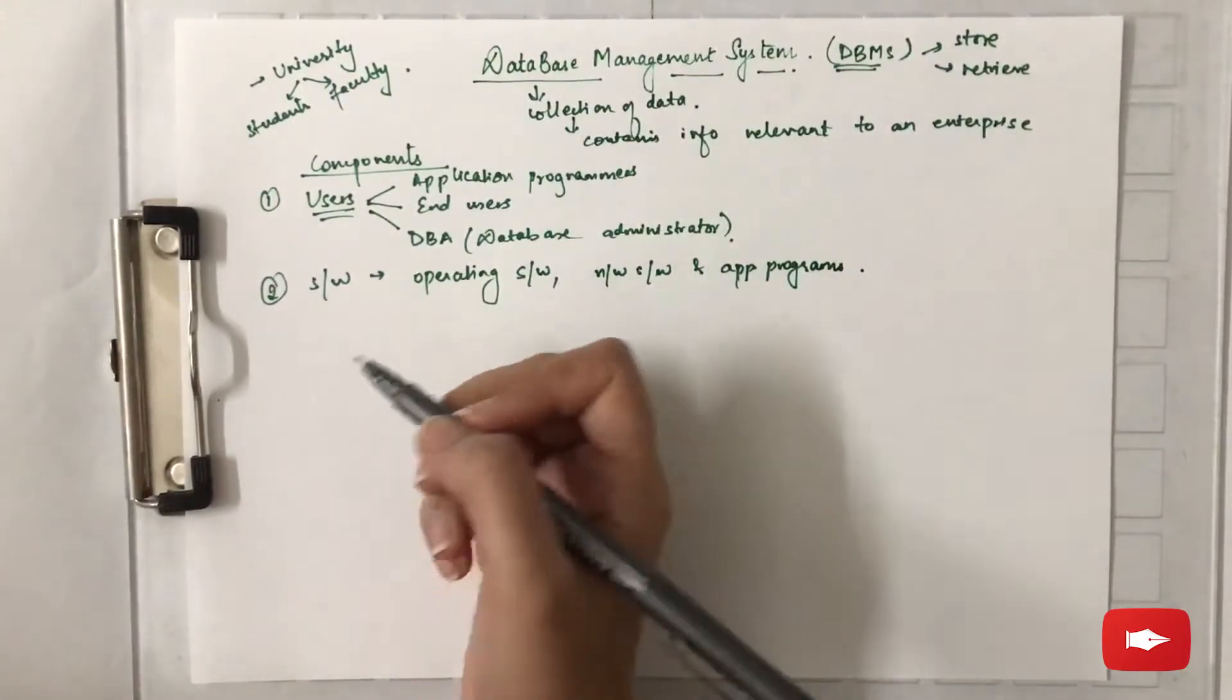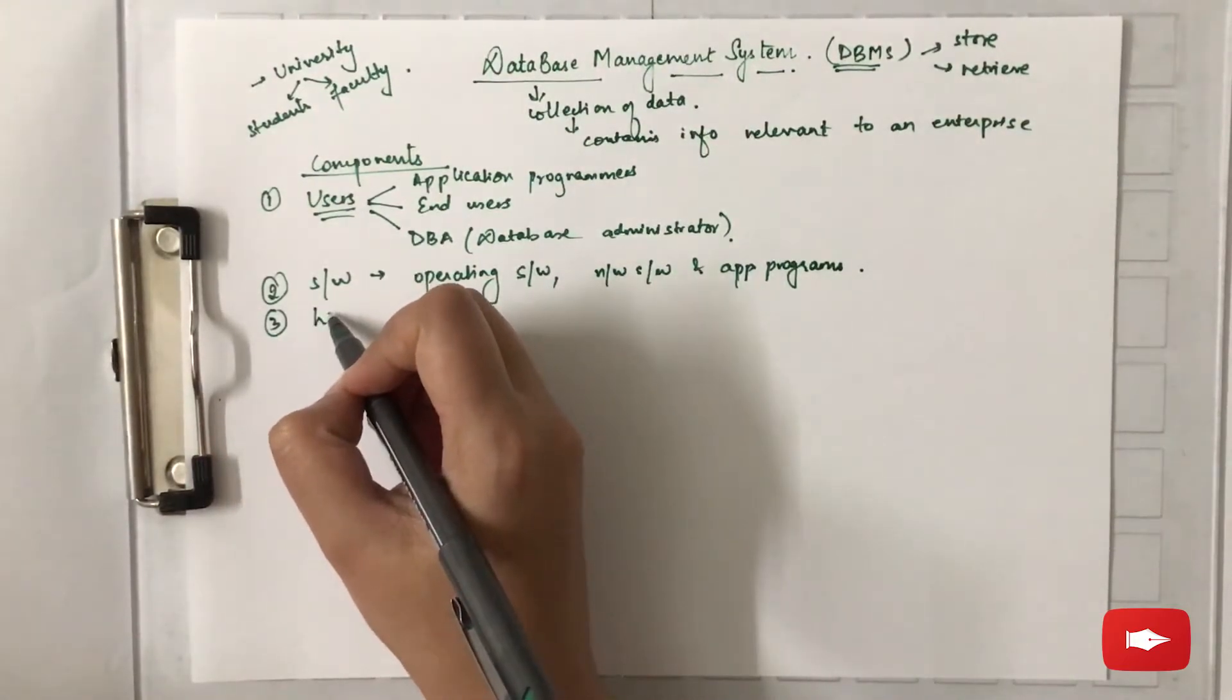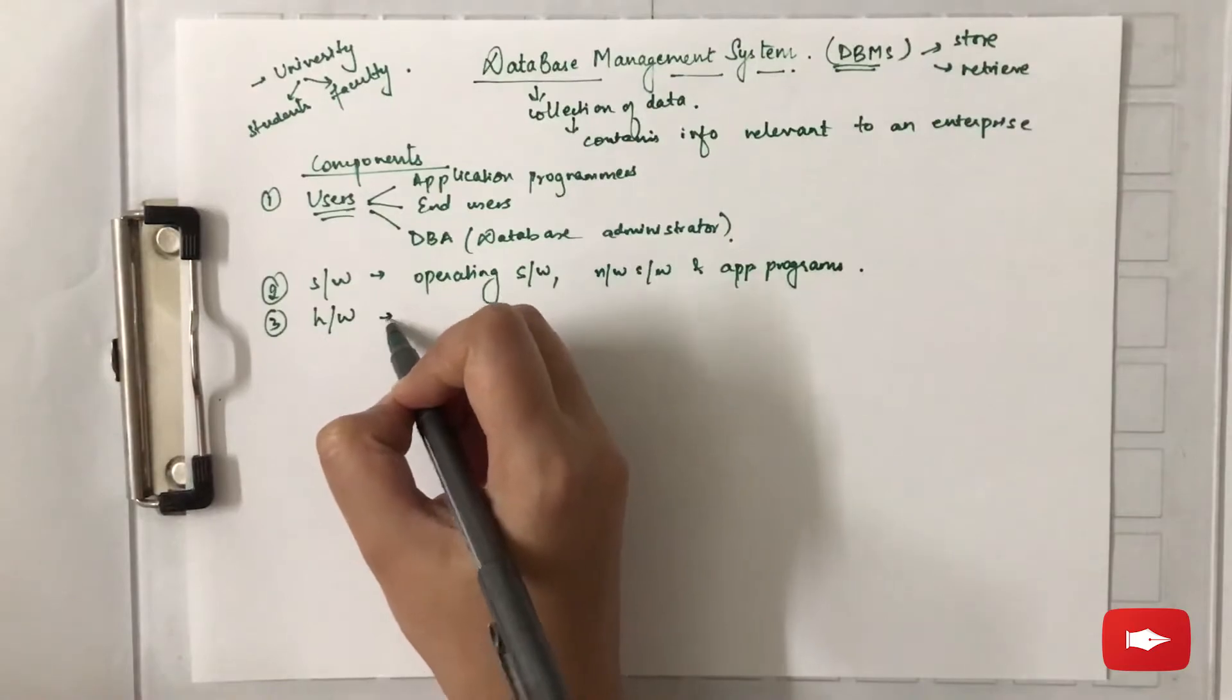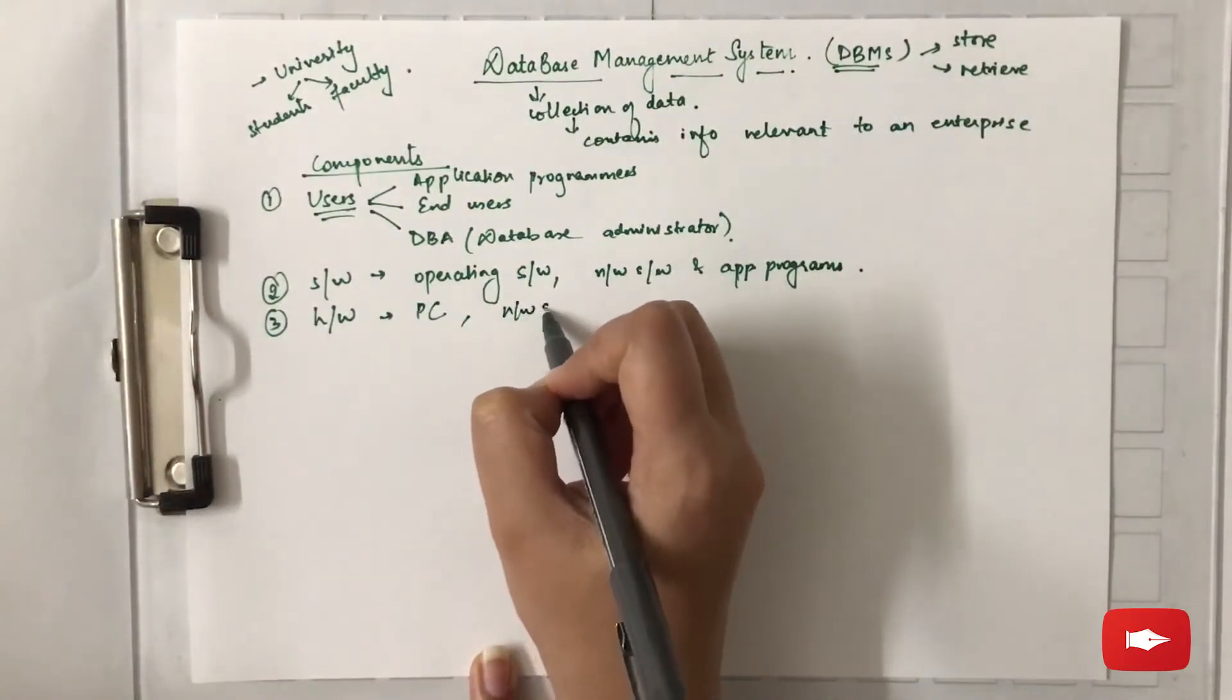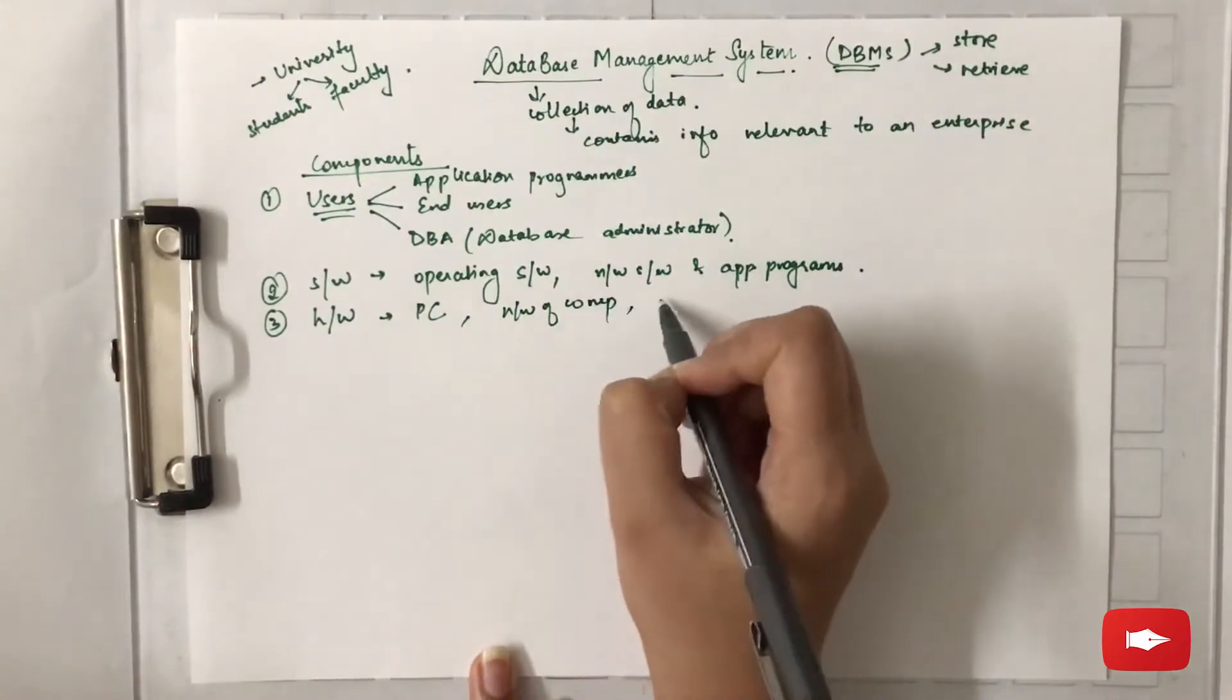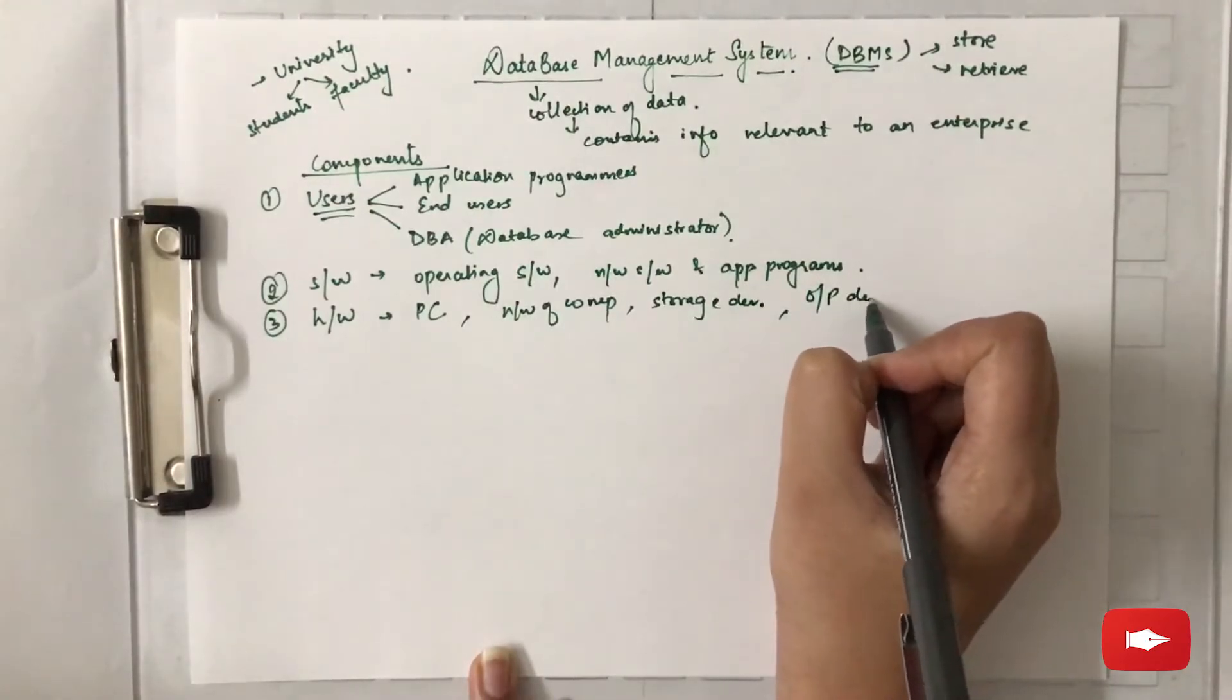The third component of DBMS is the hardware, that can be a PC or it can be a network of computers, storage devices, output devices, and so on.